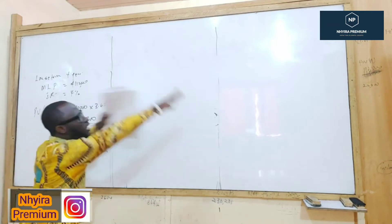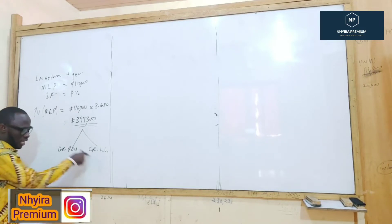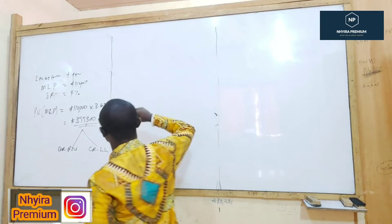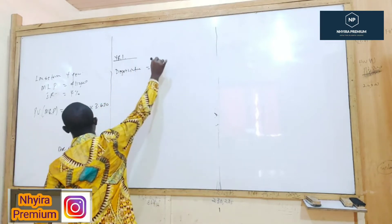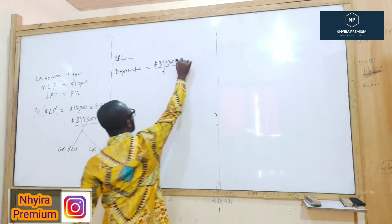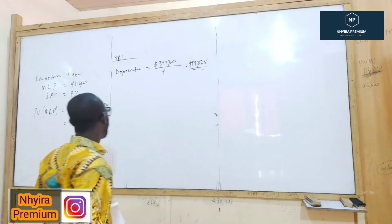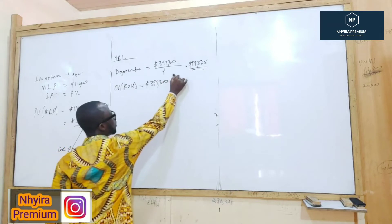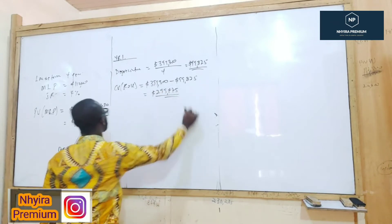On subsequent measurements, we depreciate the right-of-use asset and carry the lease liability at amortized cost. In this question, they didn't tell us when it should be accounted for, so let's assume we are accounting for it at the end of year one. Depreciation of the right-of-use asset is £399,300 over four years, which gives us £99,825. So the carrying value of the right-of-use asset is £399,300 minus £99,825, which equals £299,475.